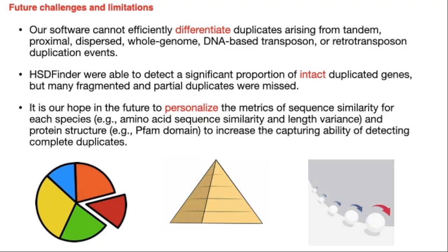At the very last, I should mention that our software cannot efficiently distinguish duplicates from tandem duplicates, whole genome duplication events, or TE-based duplications. We cannot distinguish them from different types because we are based on similarity to identify them. Although HSDFinder is able to detect a significant portion of intact duplicate genes, some fragmented and partial duplicates — such as those with less than 50% similarity — will be missed.